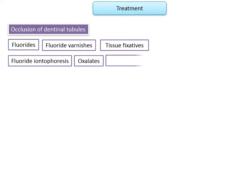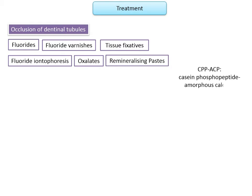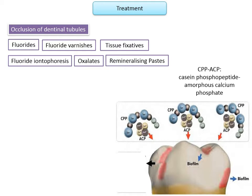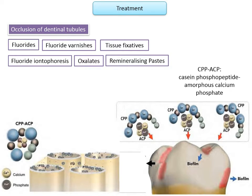Remineralizing pastes are used in-office or at home to restore minerals lost due to caries or diet. Two active ingredients are most effective: calcium sodium phosphosilicate bioactive glass, and amorphous calcium phosphate. ACP-CPP — casein phosphopeptide amorphous calcium phosphate — is most effective: the casein portion derived from milk binds ACP to the tooth surface, forming a protective hydroxyapatite barrier that occludes exposed dentinal tubules. Saturation of the oral environment with calcium and phosphate ions promotes remineralization, as shown in the graphic where tubules are blocked by mineral precipitation from CPP-ACP.